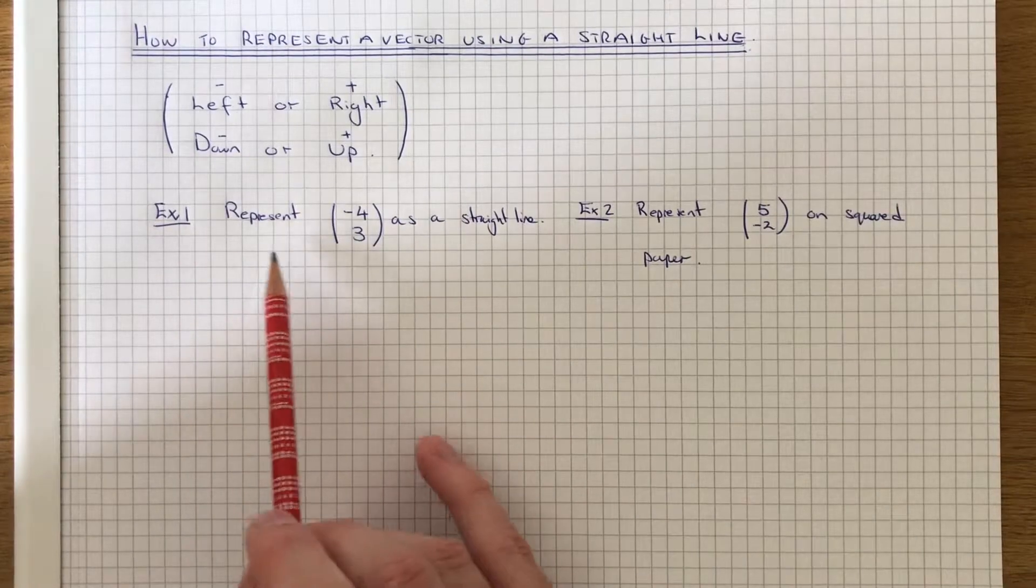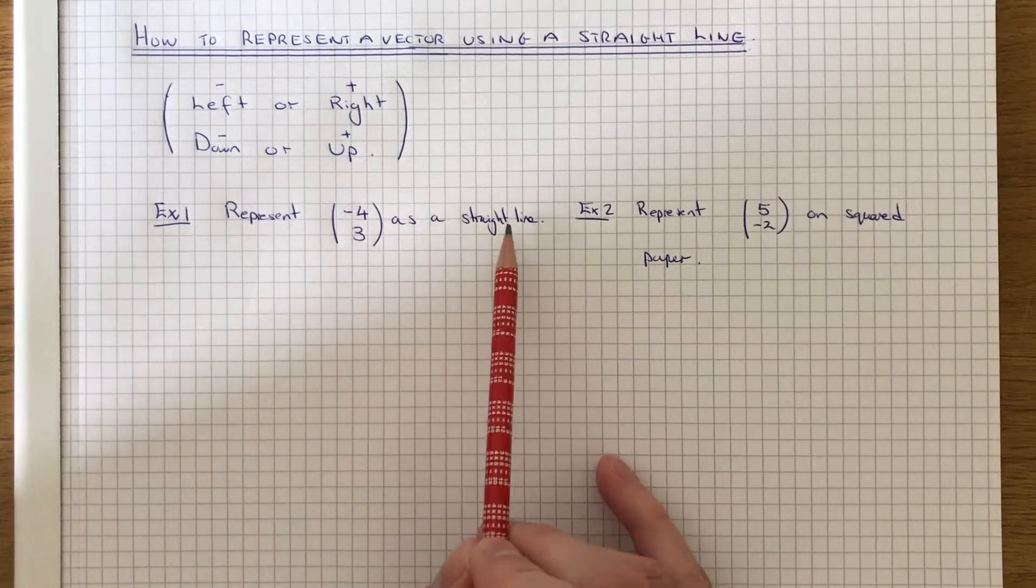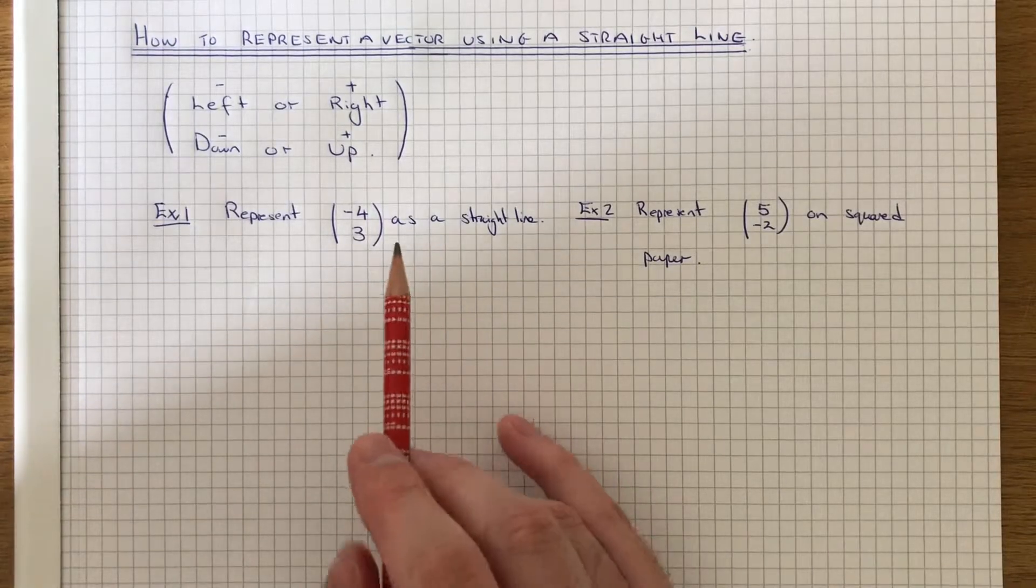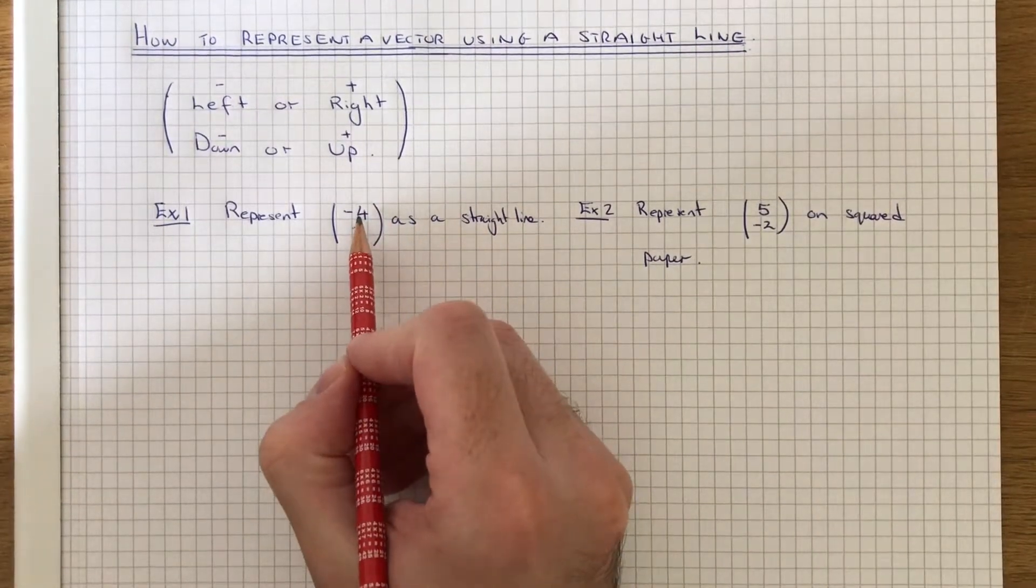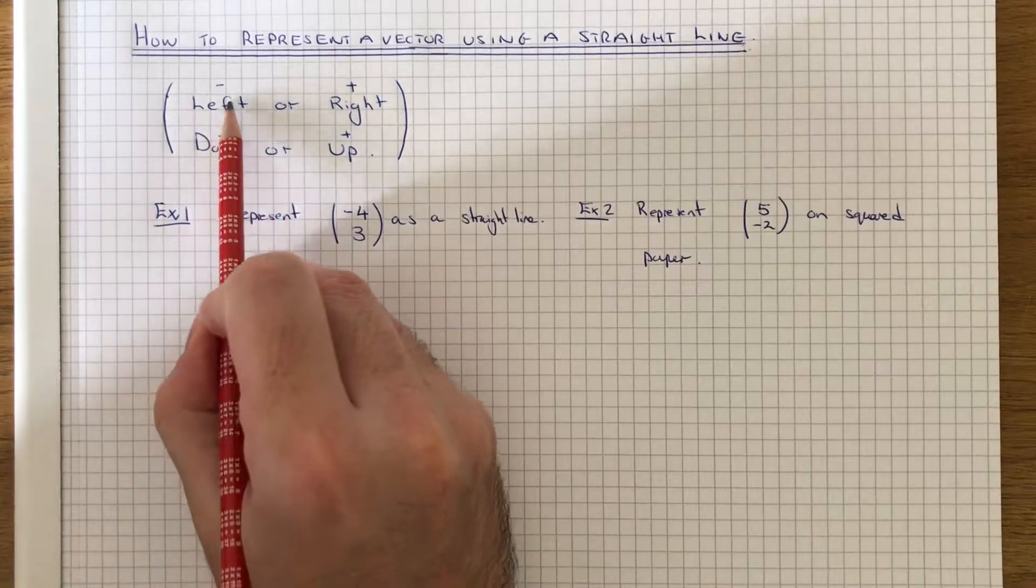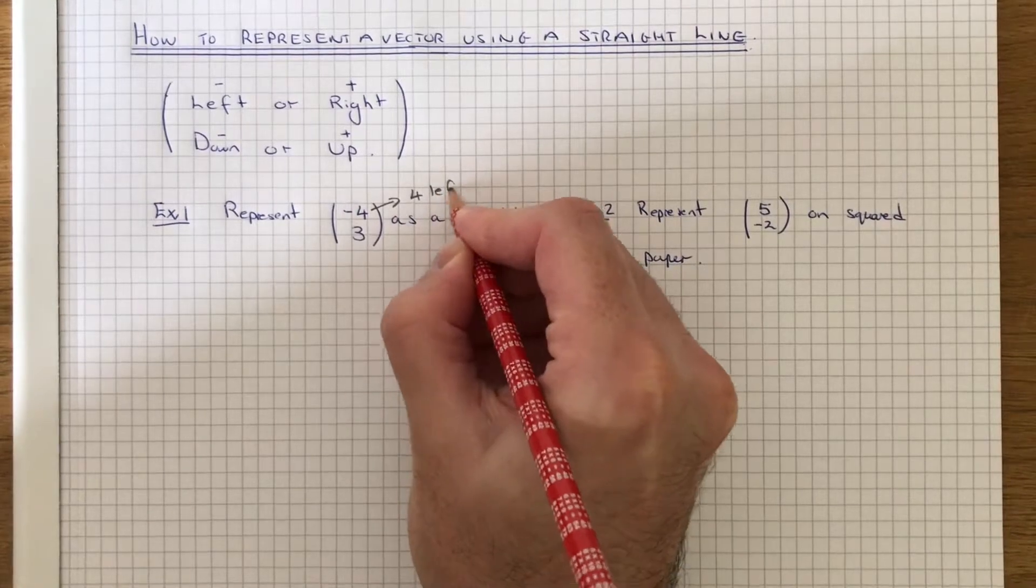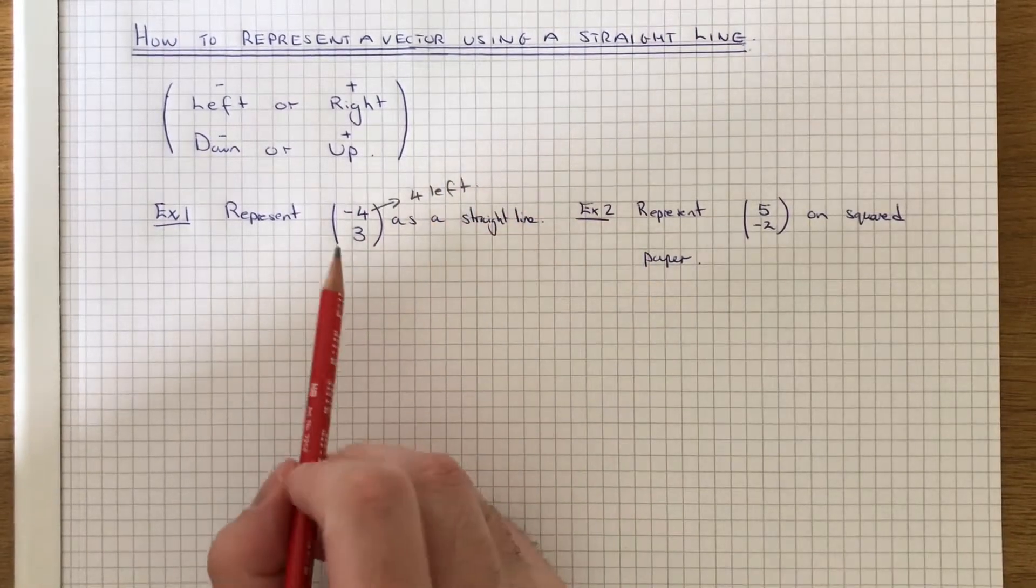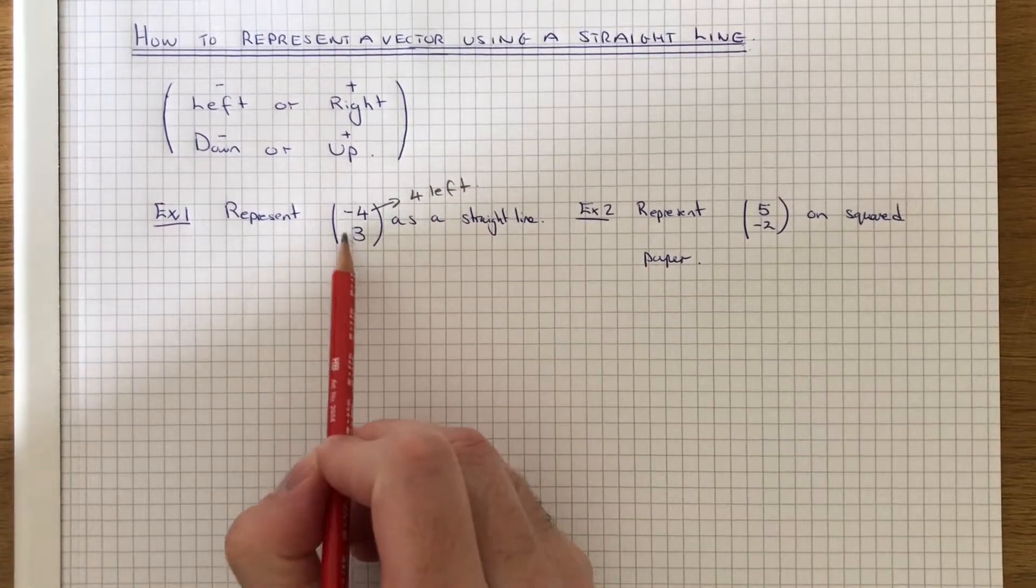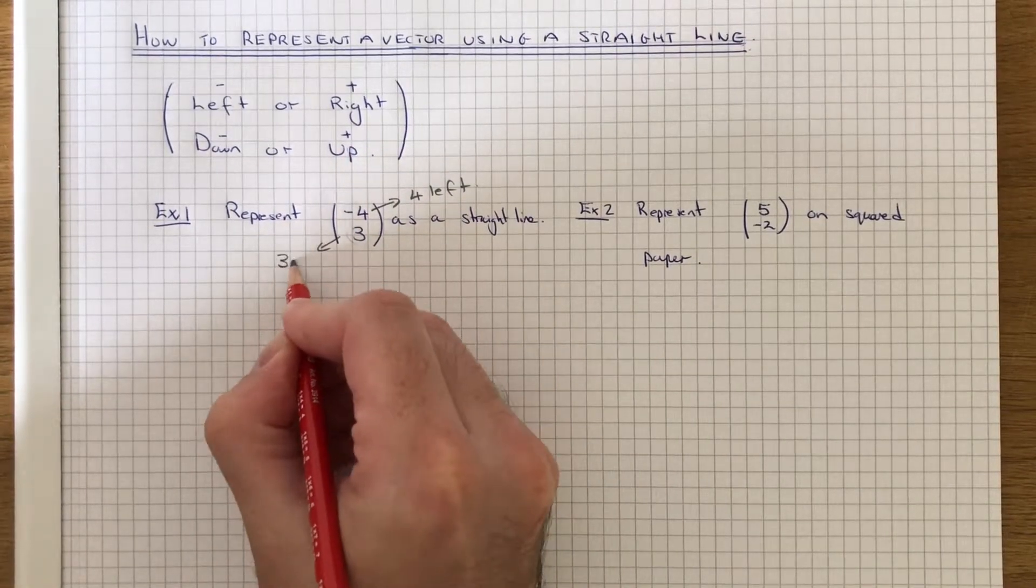Let's look at the first example. We've got to represent (-4, 3) as a straight line. Let's look at the number at the top first of all. This is the across number. Since it's minus 4, we're going to move the point 4 left. And the bottom number is positive 3. This means we move the point 3 up.